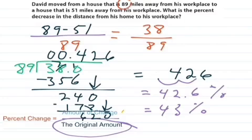Is this an increase or a decrease? This is a decrease because he moved away. So we have 43% decrease.